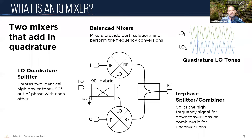So first, what is an IQ mixer? You should know that a mixer takes an LO tone and an input signal and produces a frequency offset version of the input signal at both LO plus the input signal frequency and LO minus the input signal frequency — that's double-sided conversion. An IQ mixer is two of these mixers driven in quadrature, meaning the LO tone is 90 degrees out of phase between the two mixers, and then the output signal is combined.